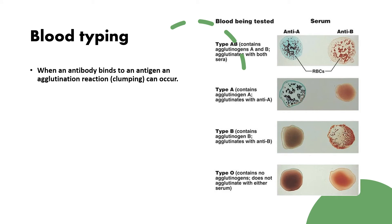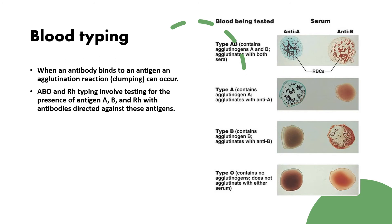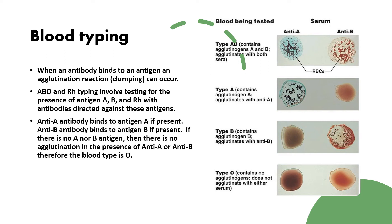When an antibody binds an antigen, an agglutination reaction — clumping — can occur. ABO and Rh typing involve testing for the presence of antigen A, B, and Rh with antibodies directed against these antigens. Anti-A antibody will bind to antigen A if present; anti-B antibody will bind to antigen B if present. If there's no A or B antigen, there's no agglutination, and therefore the blood type would be O.